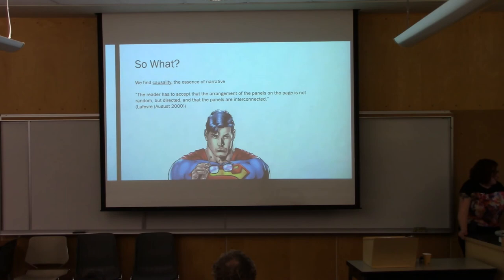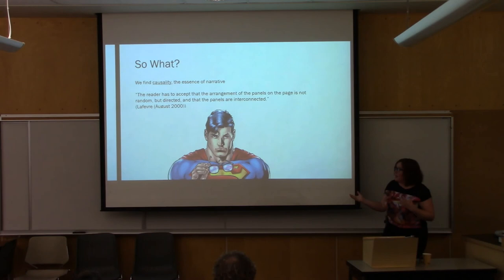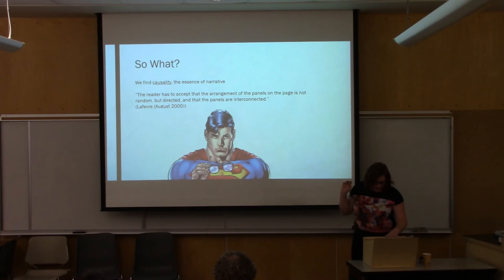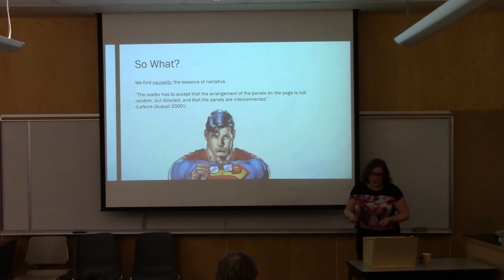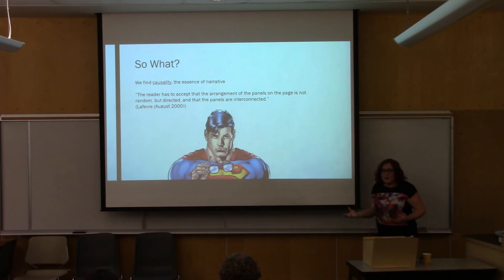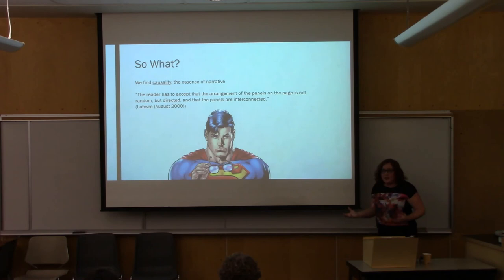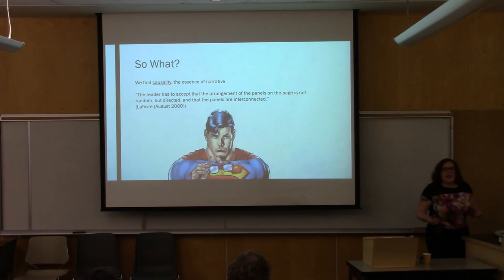There's a wonderful quote from the comic scholar Lefebvre, who wrote that the reader has to accept the arrangement of panels on the page is not random but directed, and that the panels are interconnected. What I hope I've shown today is that that's not just true of panels in comics, but it's also true of poems in Latin elegy. For so long — partially because we read this poetry in a codex rather than on a papyrus scroll — we've treated each poem in isolation. But if we read them this way, we're allowed to pull out overarching themes and tropes that have been overlooked, track the development of characters, see the poet's growing frustration and his growing understanding of the Puella, and possibly even build a narrative that we haven't found in Latin elegy before. Thank you.